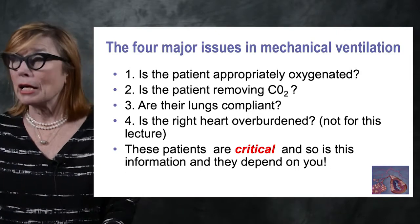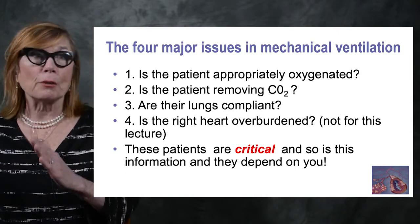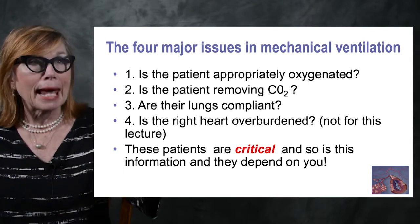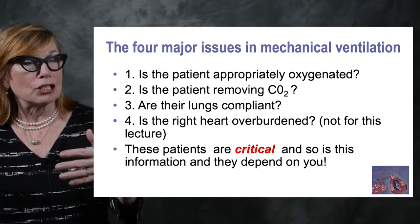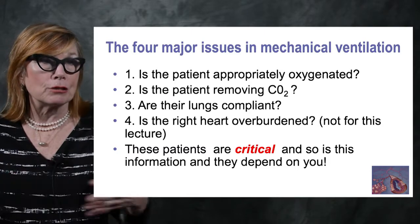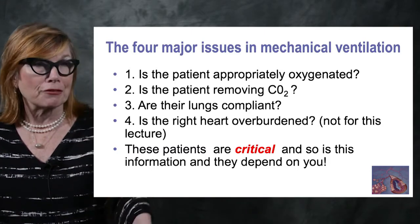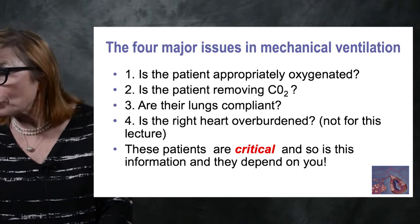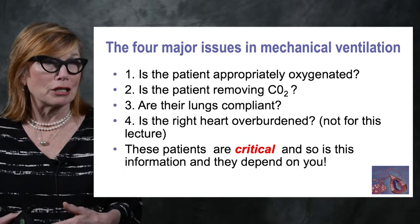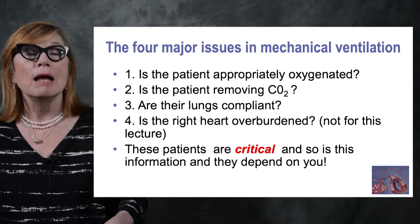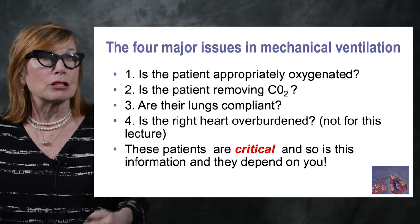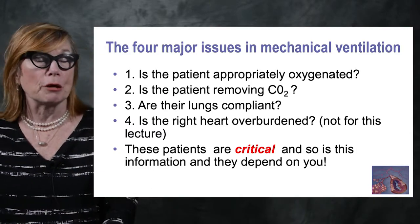Number one: is your patient appropriately oxygenated? You're going to evaluate that not just by the PaO2 and the saturation, but by the PF or the oxygenation index, which will help us understand if the oxygen we gave down the ET tube actually reached the alveoli and transferred into the blood. And number two: whether or not our patient is removing CO2 through the process of ventilation. CO2 is produced by cellular respiration, but lung regulation is through ventilation — that's how we remove CO2.